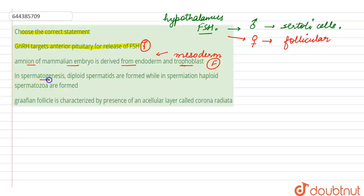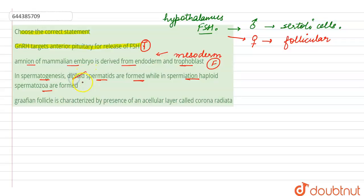The third statement says that in spermatogenesis, diploid spermatids are formed, while in spermiation, haploid spermatozoa are formed. However, spermatids are formed after meiosis II has occurred, and spermiation is the process of differentiation of those spermatids. So both cell types are haploid in nature, which makes this statement a false statement.